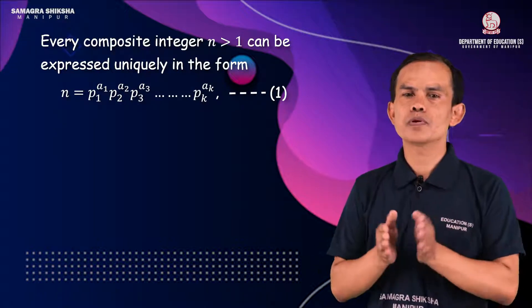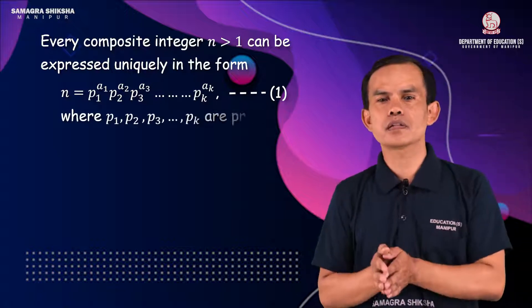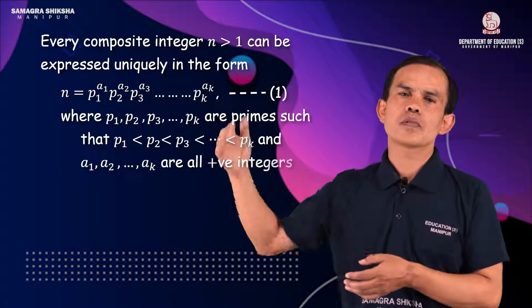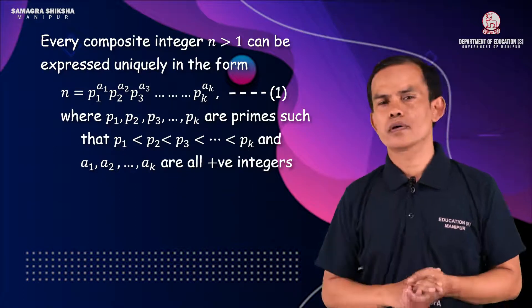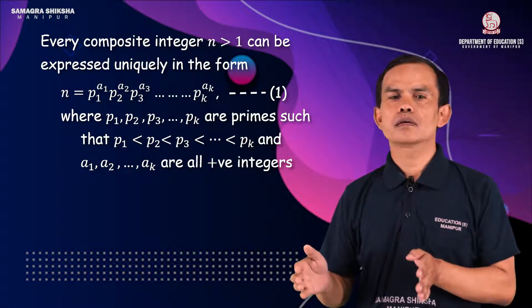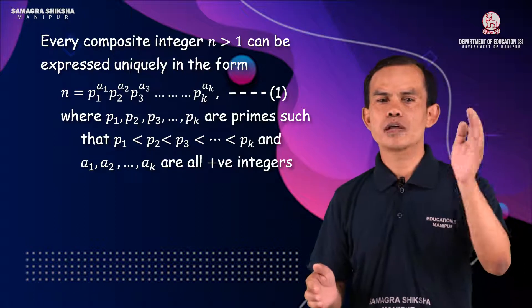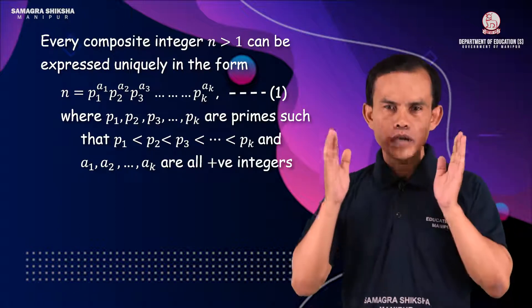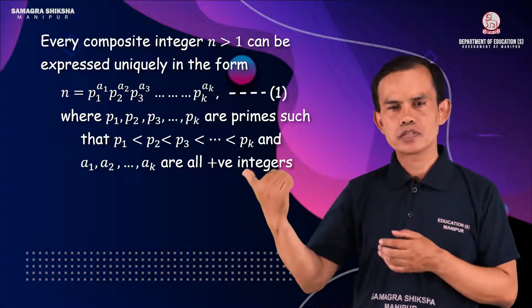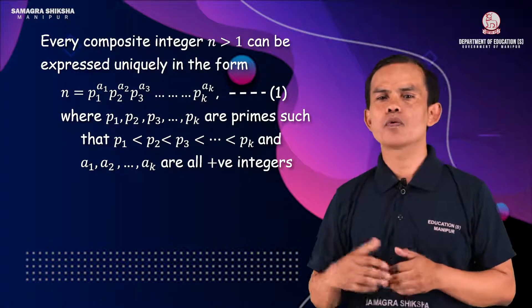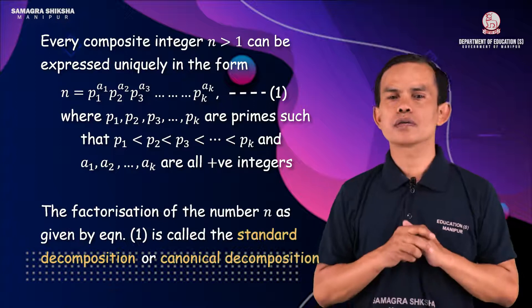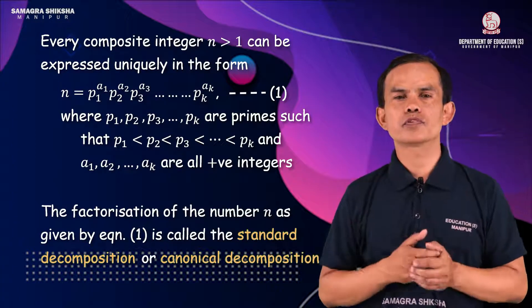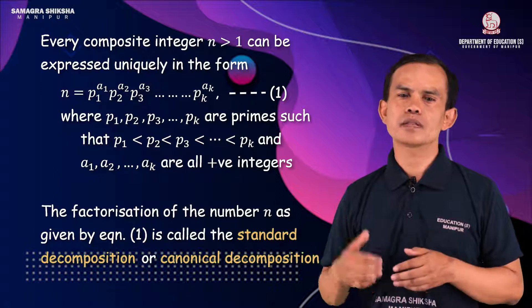Here P1, P2, P3 are all prime numbers, and the exponents are positive integers. This expression is called the standard or canonical decomposition of the number, also known as the unique factorization theorem.